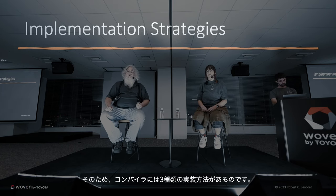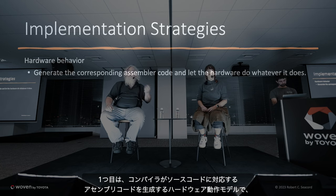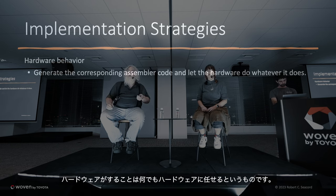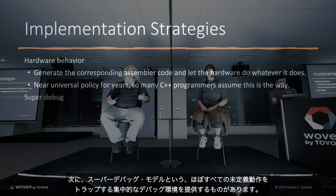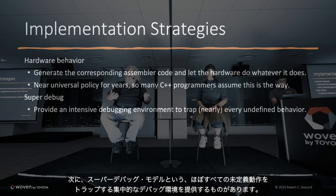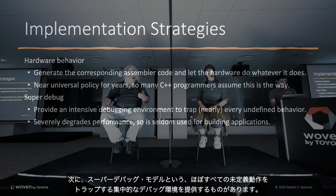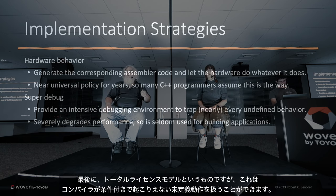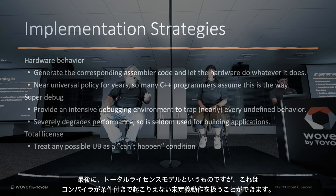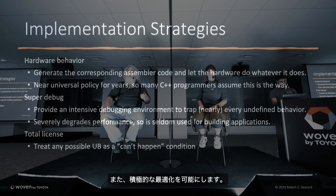Compiler writers have one of three different implementation strategies. The first is the hardware behavior model, where the compiler generates the corresponding assembly code and just lets the hardware do whatever the hardware does. For many years this was the universal policy, and many experienced C++ programmers have internalized this hardware behavior model. There is a super debug model where you trap nearly all undefined behaviors — useful for development and testing but it severely degrades performance. Finally, there's the total license model, where the compiler can treat any undefined behavior as a condition that can't happen, and that permits aggressive optimization.